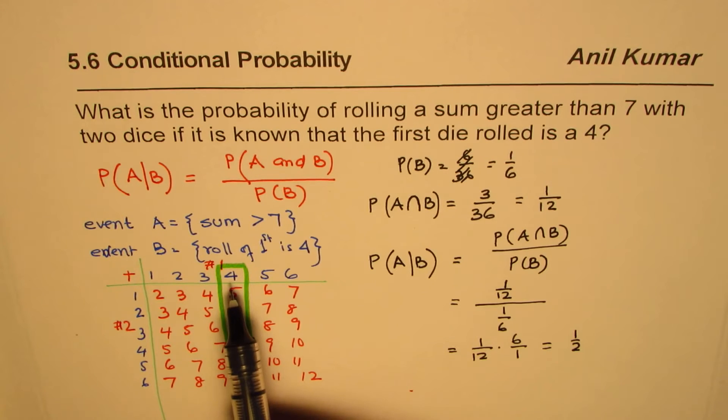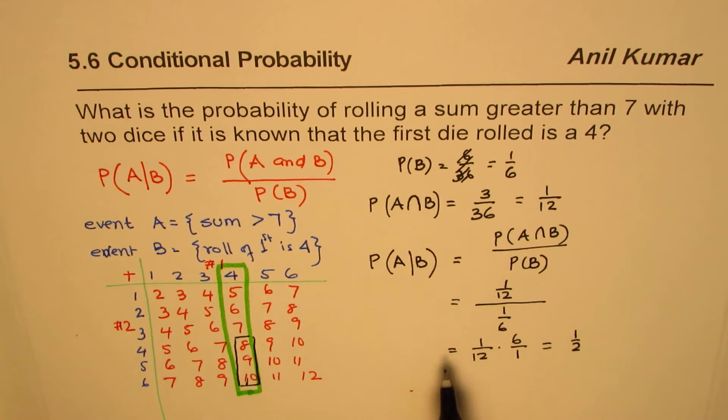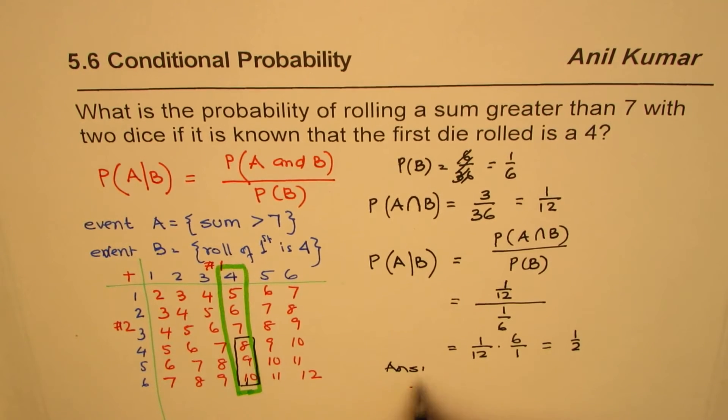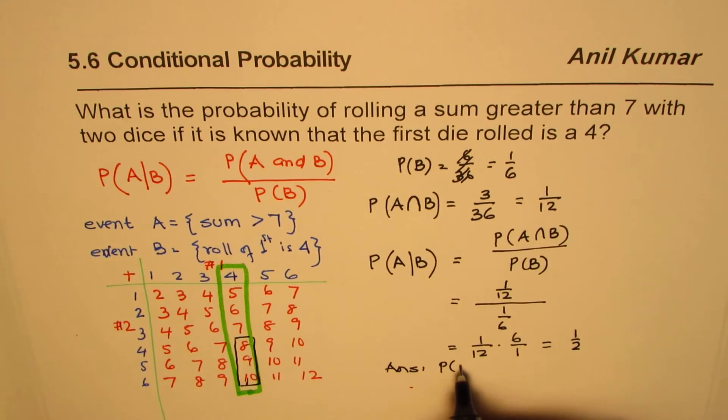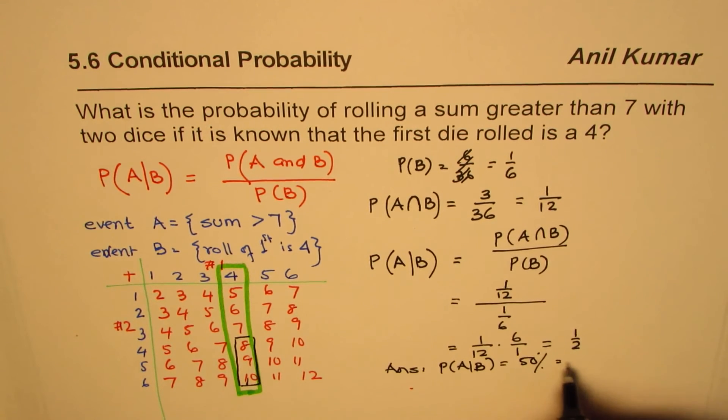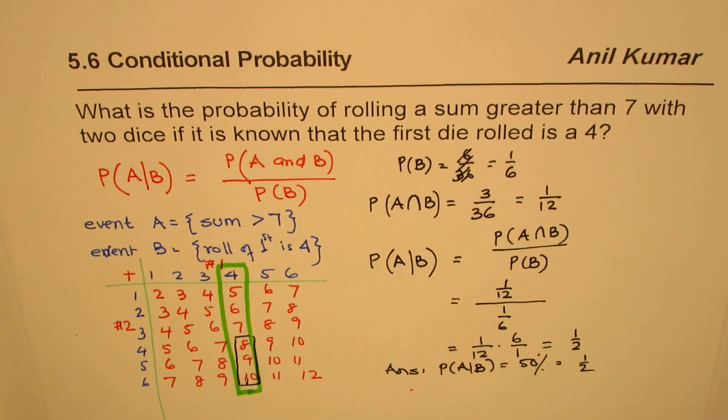So when the event A has happened, that is, if rolling the first die gives you a number which is 4, then the probability of getting a number greater than 7 on the second roll is half. So that is the answer. And that is how you should understand and do such problems. I hope that makes sense to you. Or you can say 50% or you could write half. Either way. So I hope this point is clear to you. We'll take a few more examples and then move on.